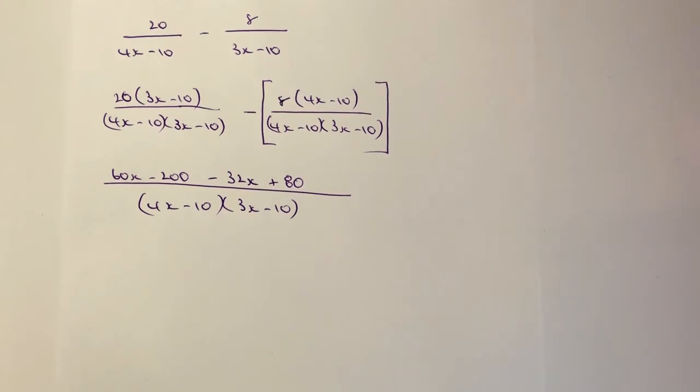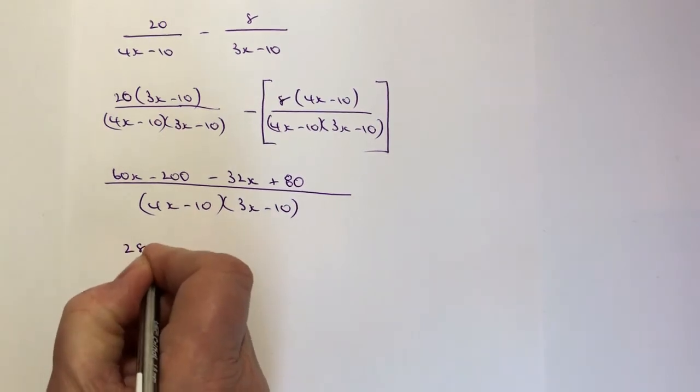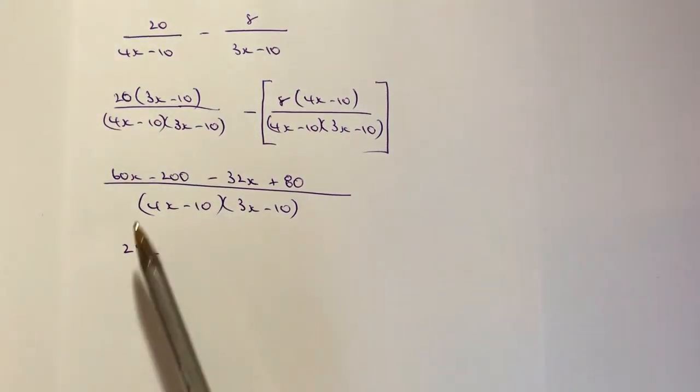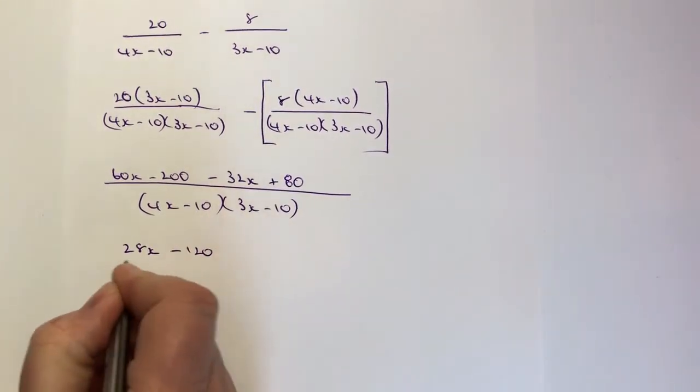And then really, it's just a case of tidying everything up and making it look a little bit more presentable. So the first thing I'm going to do is I'm going to look at the top and gather up the like terms. I've got 60x minus 32x. Well, that's going to give me 28x. And then I've got minus 200 plus 80. Well, that's going to give me minus 120.